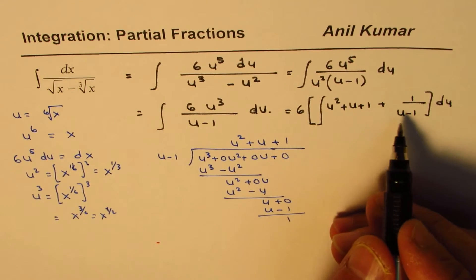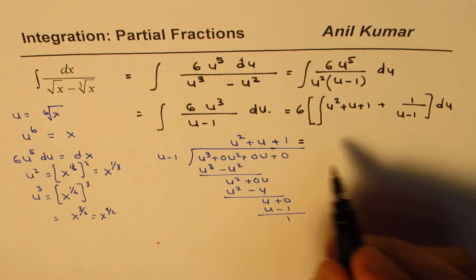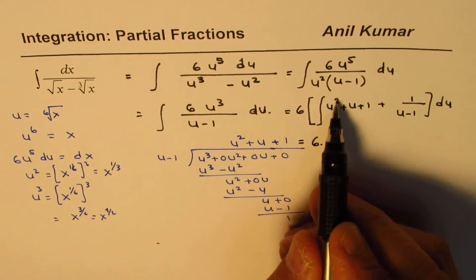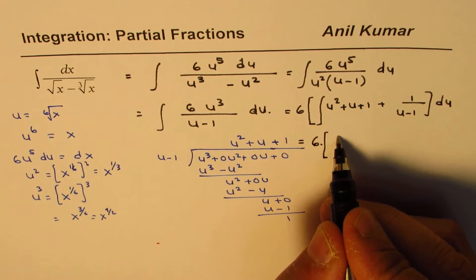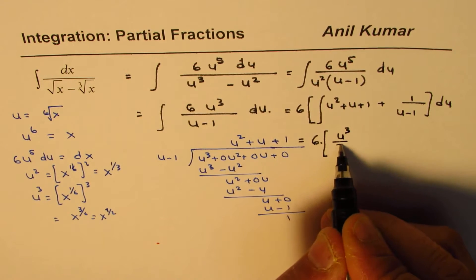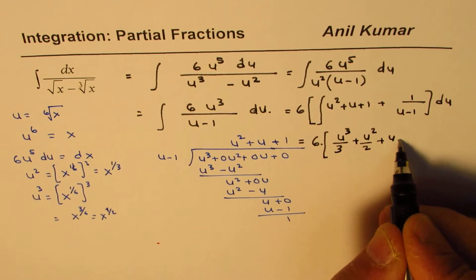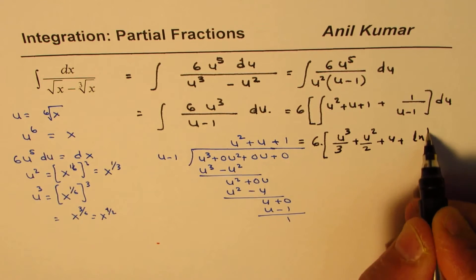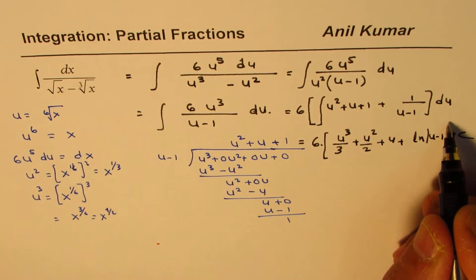Now we can actually write down the result. So we have this as 6 times integral of this is, let's put like this, 6 times integral of this is u cube over 3 plus u square over 2 plus u plus ln absolute value of u minus 1 plus c.